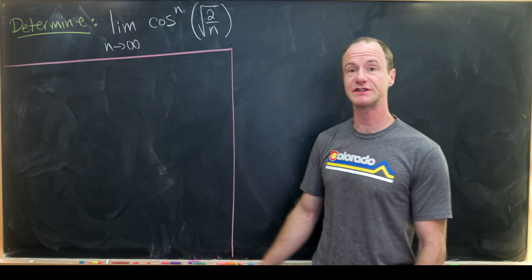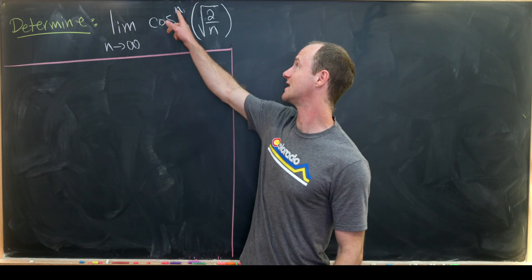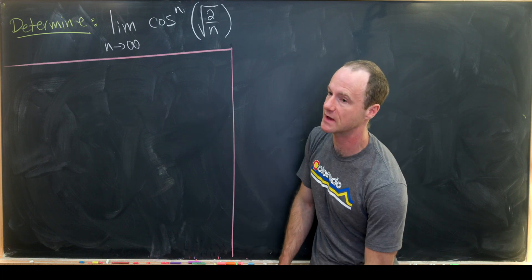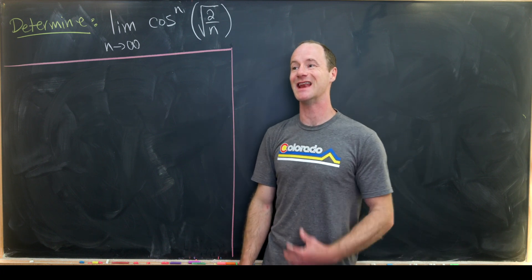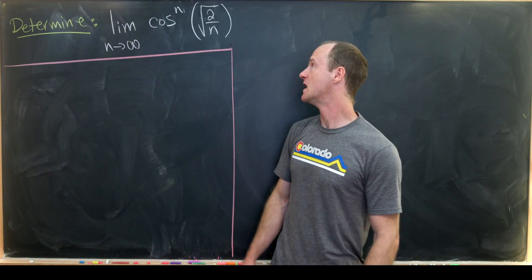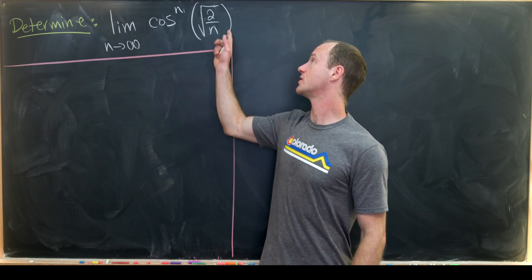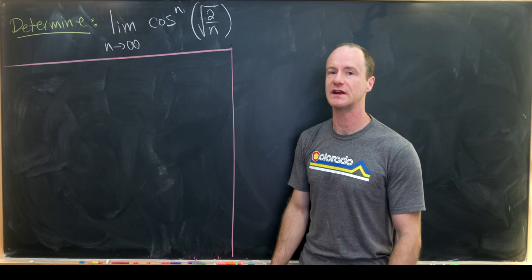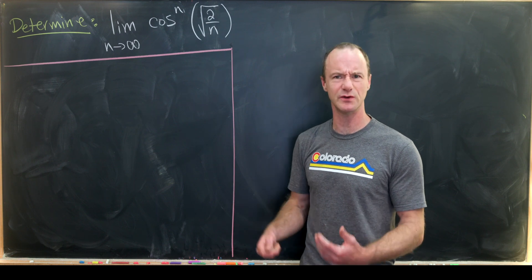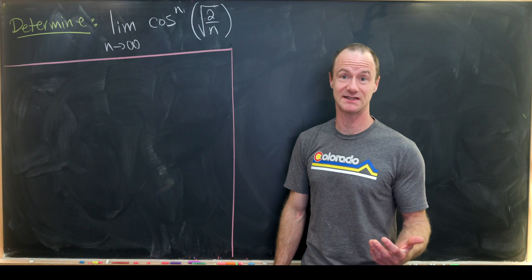Today we're going to look at a nice limit. In particular we'll calculate the limit as n goes to infinity of cosine to the n evaluated at the square root of 2 over n. Before we get started, let's notice that this is an indeterminate form of type 1 to infinity, because if we let n approach infinity the argument of cosine becomes 0, but cosine of 0 is 1. Before we look at a careful evaluation, let's do a sketchy calculation just to see what we might guess this limit to be.